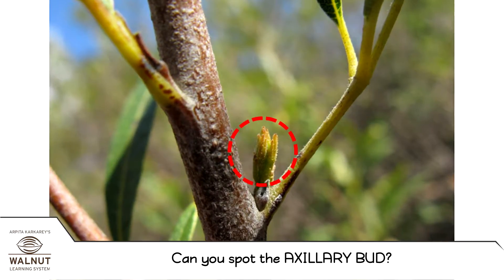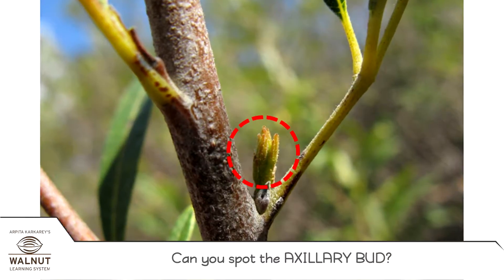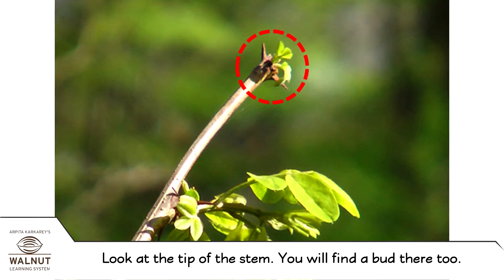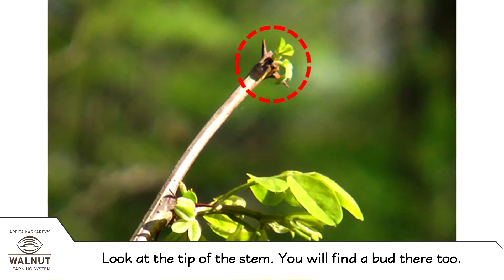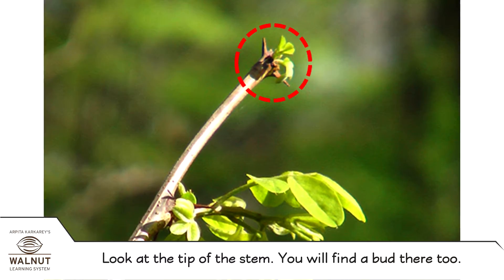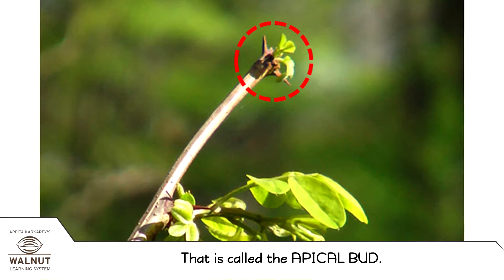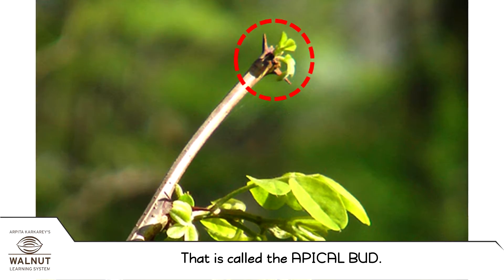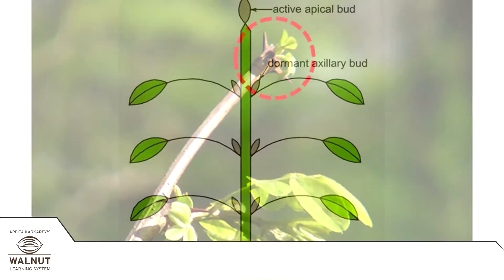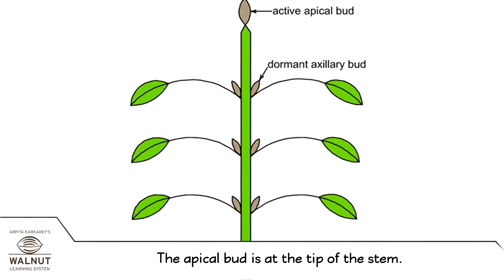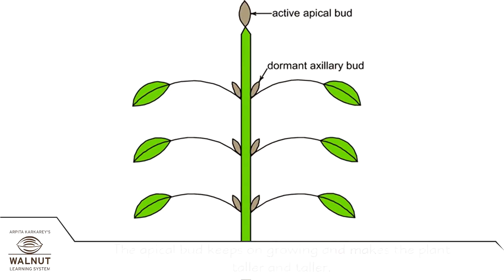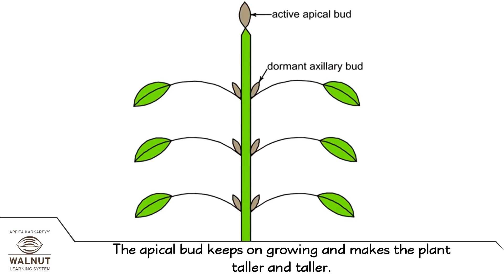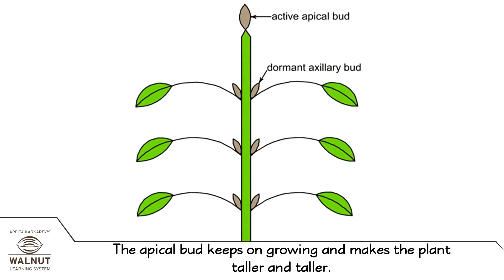Each bud is called the axillary bud. Can you spot the axillary bud? Look at the tip of the stem — you will find a bud there too. That is called the apical bud. The apical bud is at the tip of the stem.